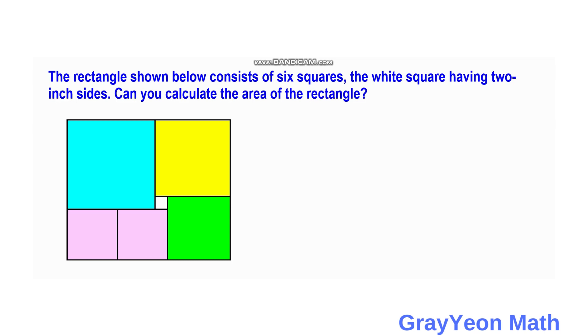blue square with side as x, and this yellow square as x minus two because of their difference of two because of this white square.